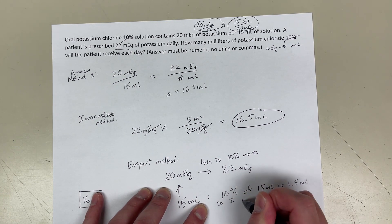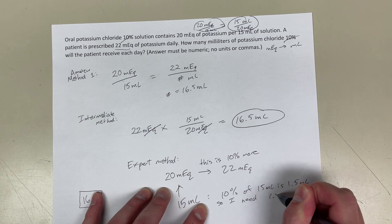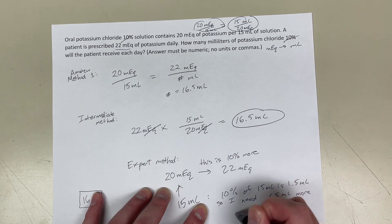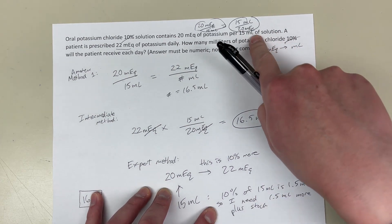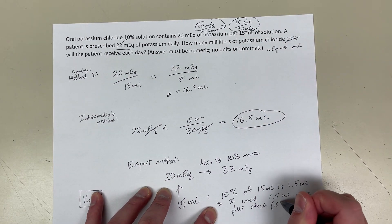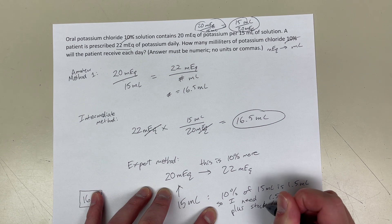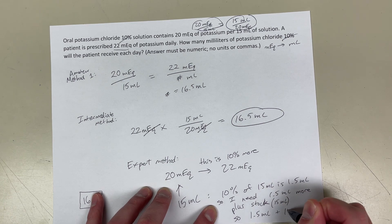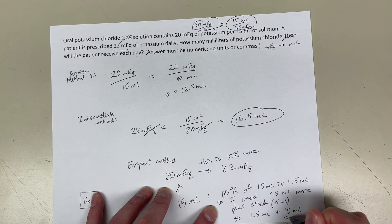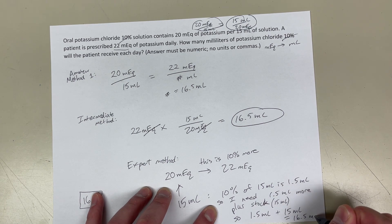So, I know I need 1.5 milliliters more plus whatever the stock solution is, 15 milliliters. So, I'm just going to add 1.5 milliliters plus 15 milliliters. And that equals 16.5 milliliters.